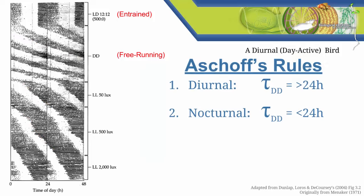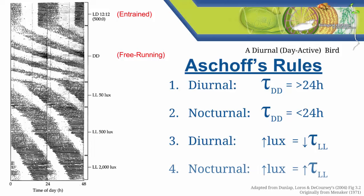These experiments help us illustrate the next pair of Ashoff's rules. Our experiments with the diurnal bird illustrate the third rule. In general if you take a diurnal organism like our bird and let it free run under constant light then increasing the intensity of the light will decrease the free running period. Ashoff's fourth rule is that the opposite is true in nocturnal organisms. In general if you take a nocturnal organism and let it free run under constant light then increasing the intensity of the light will increase the free running period.